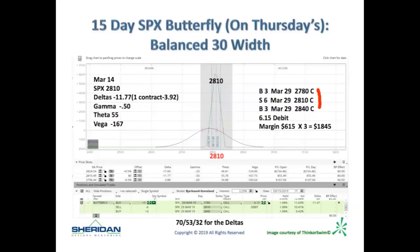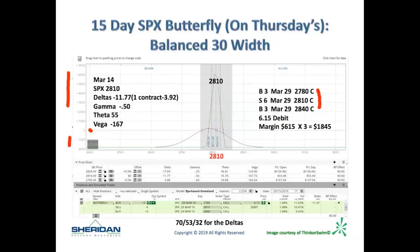The at-the-money option has the most time premium or extrinsic value. Looking at the P&L graph, you can see the zero P&L line, the profit zone above it, and the loss zone below. The underlying when I took this example last night was at 2810. At expiration in 15 days — March 29 on this trade — you can make a boatload of money if it doesn't move much and stays around 2810.